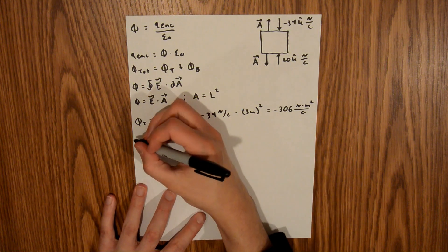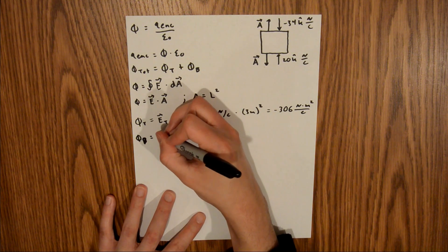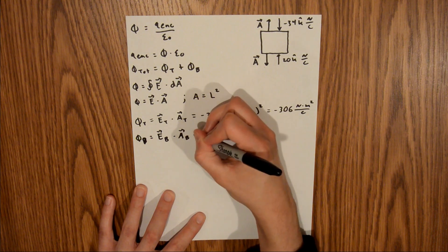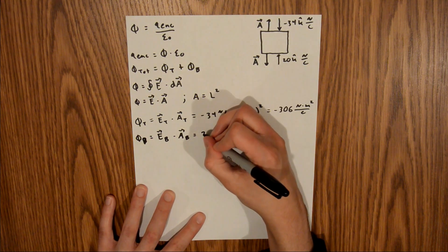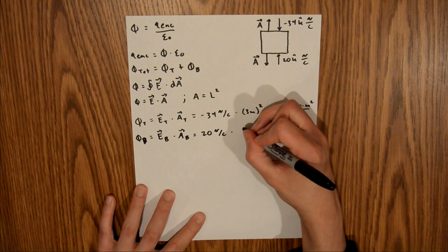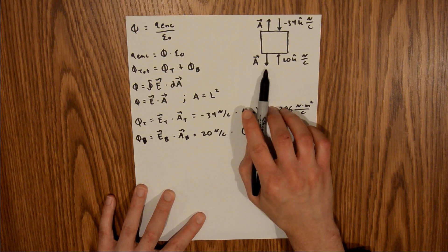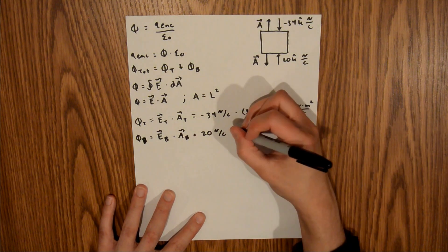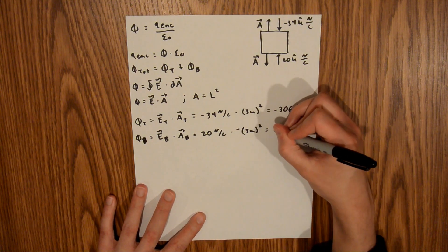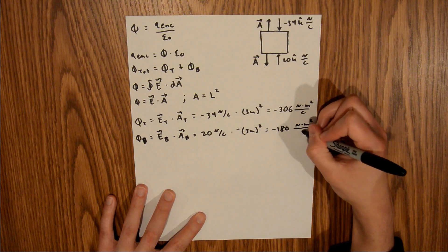Now we can do something similar for the bottom face. The flux at the bottom is equal to the electric field at the bottom times the area of the bottom, which is 20 newtons per coulomb times 3 meters squared. But in this case, the vector normal to our area points in the negative z direction, so we need to introduce a negative sign. Plugging that in gives negative 180 newton·meters squared per coulomb.